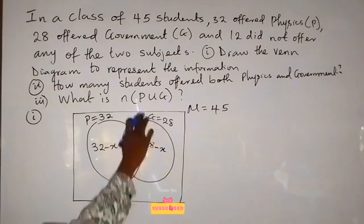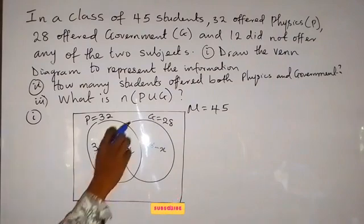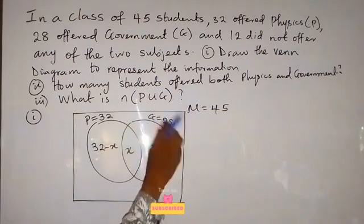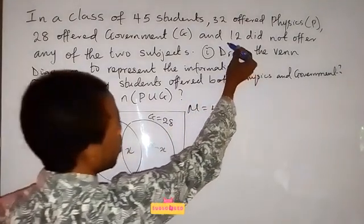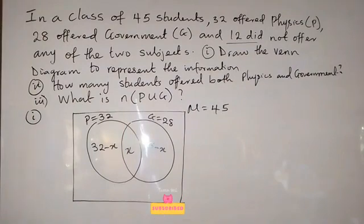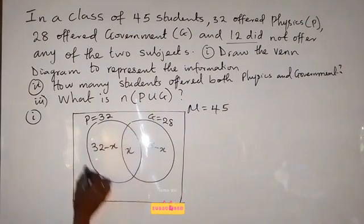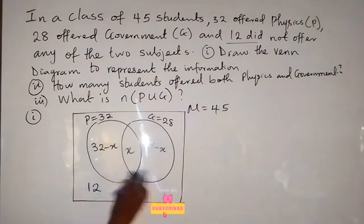By the time we subtract x, we have 32 minus x. And also people offering government only here now, it will be 28 minus x. And when we read the question further, they said, and 12 did not offer any of the two subjects. So 12 did not offer any of the two subjects. That means 12 is neither in physics nor in government. So it has to be somewhere outside. You can put it anywhere outside the circles. So that's our Venn diagram representing the information given.